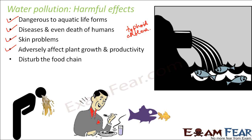Water pollution can also disturb the food chain. The food chain is the process where one organism depends on another organism for its food. For example, green plants produce their own food by photosynthesis. Green plants are eaten by animals like cows and goats, which then depend on plants. These animals are in turn eaten by other animals like lions or tigers — that is how the food chain works.